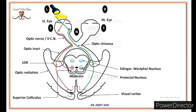Now this left pre-tectal nucleus sends this visual information to both sides of the Edinger-Westphal nucleus. Similarly, the right pre-tectal nucleus also sends visual information to both sides of the Edinger-Westphal nucleus.